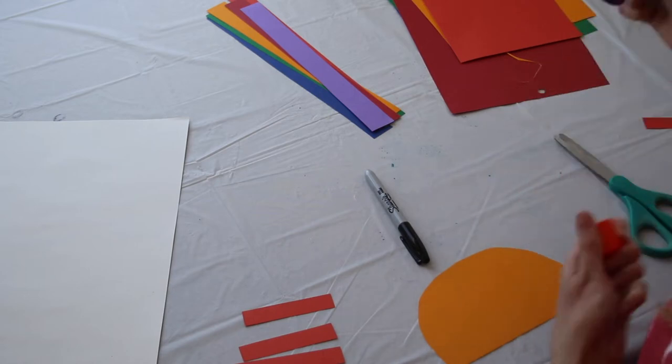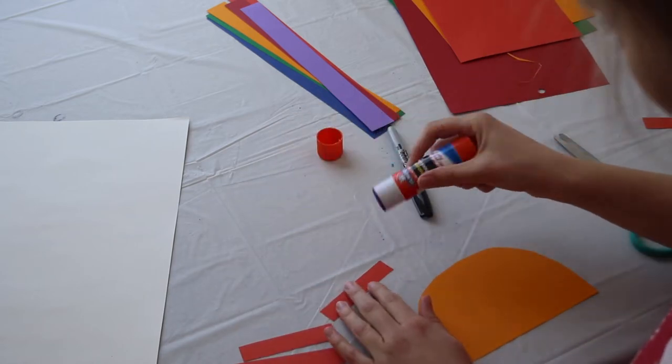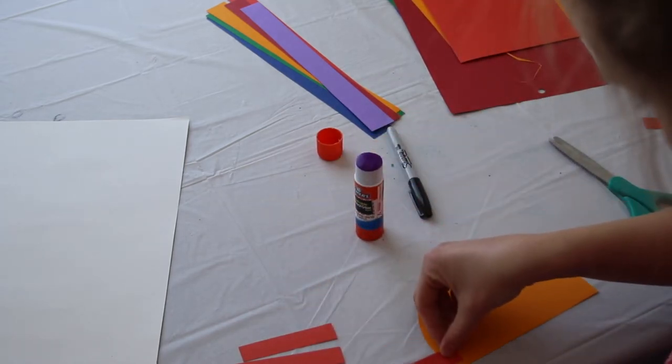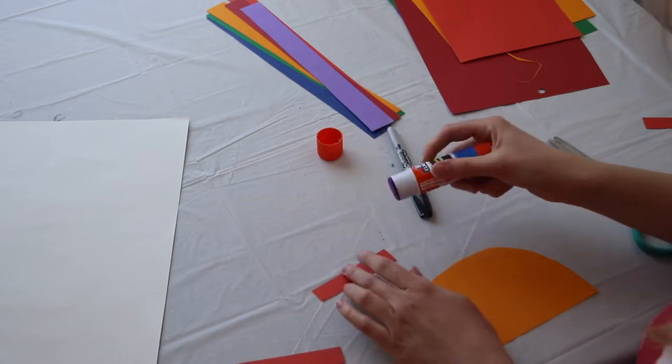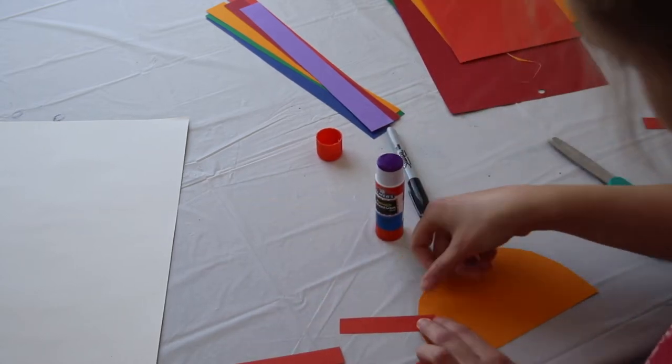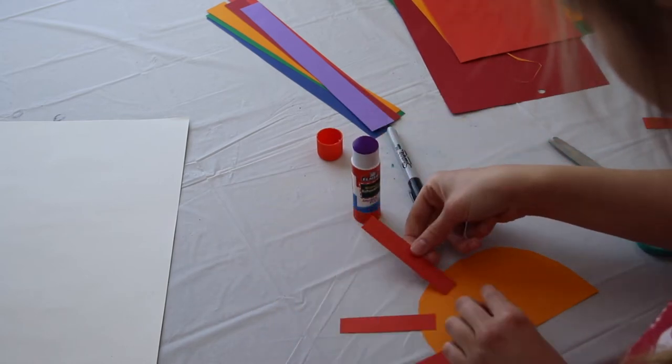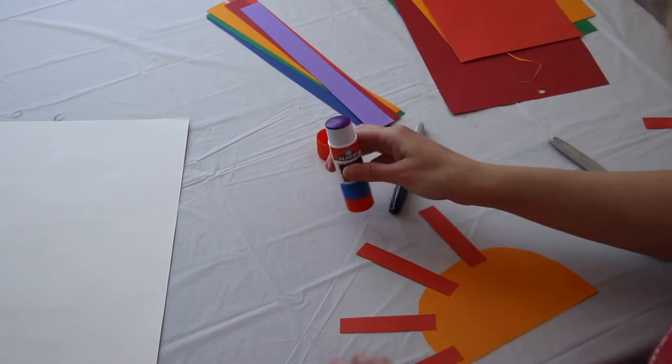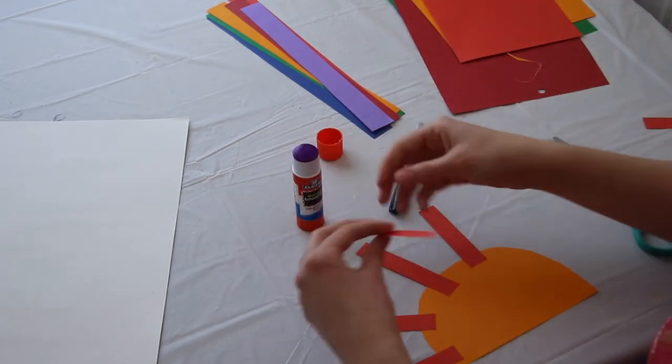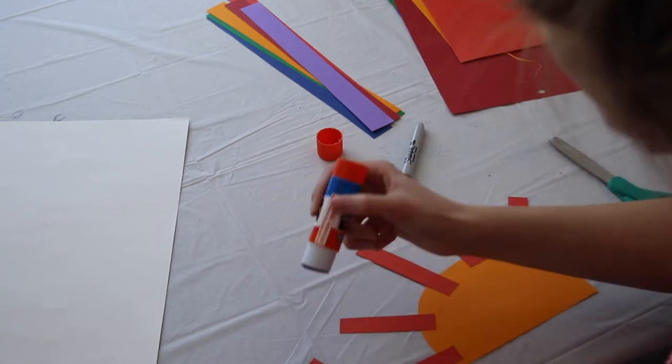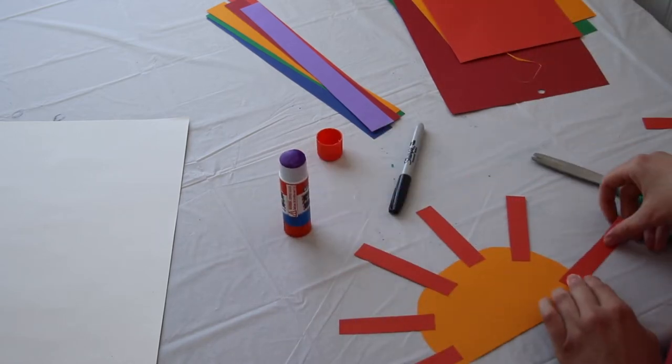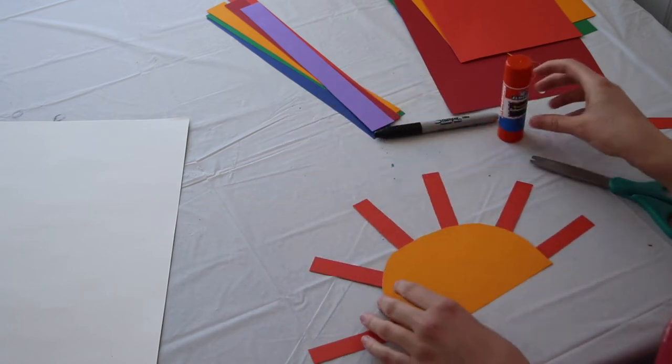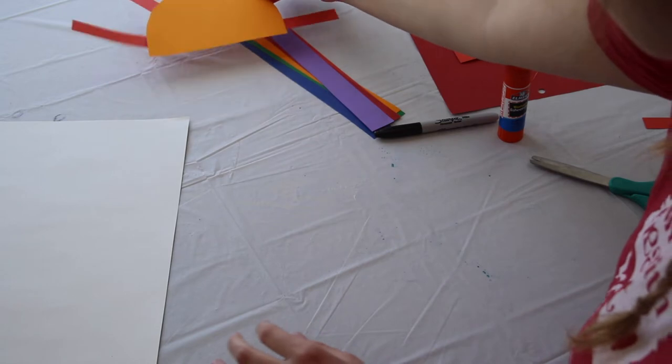To attach them, I'm going to take my glue stick. I'm going to put a little bit of glue on the bottom and then I'm going to glue it to the back of my sun. And now I have my sun. I'm going to put my cap back on my glue stick. I'm going to put my sun off to the side.